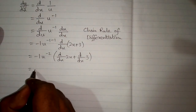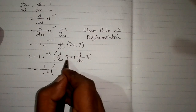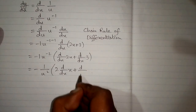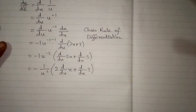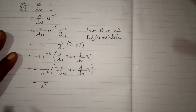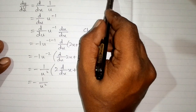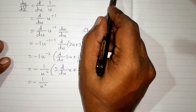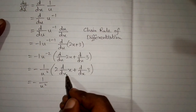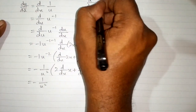Now this can be written as minus 1 upon u squared. And here we can write the coefficient of x before the derivative, so we have 2 times d/dx of x plus d/dx of 3. We know that the derivative of x is 1, because if the power is 1, we have 1 times x to the power 1 minus 1, and x raised to the power 0 is 1, so 1 times 1 is 1. So the derivative of x is 1.